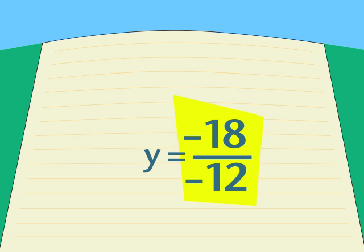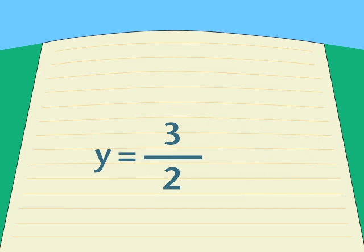The negative 12s cancel, leaving 1y equal to negative 18 divided by negative 12. Negative divided by negative gives us a positive. And we can reduce that to its lowest terms, 3 over 2, which is the same as 1 and a half, but there's no need to write the mixed fraction unless you want to.